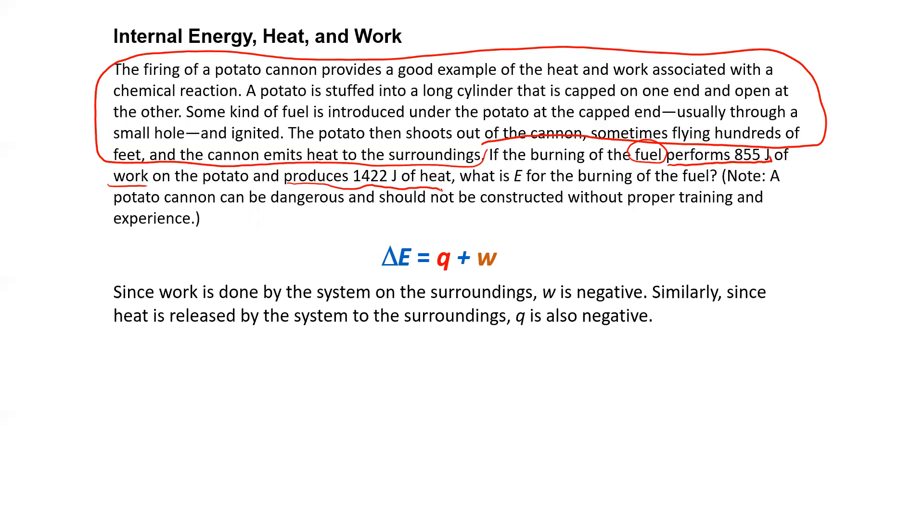So since work is done by the system on the surroundings, the work is negative. And since the system is also losing heat, releasing it, exiting exothermic to the surroundings, its Q is also negative. So you have to make sure that you put the signs to get that negative value, because this is showing that the system's losing energy overall. It's losing this much energy. Why? Because it has to do work on the surroundings, and it's losing heat.